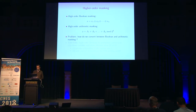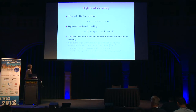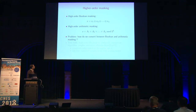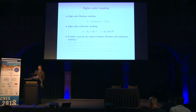The problem is the following: we have high-order Boolean masking, but for arithmetic operations we would like to use high-order arithmetic masking, in which X is split into N arithmetic shares. The question is how do we convert between high-order Boolean and high-order arithmetic masking?